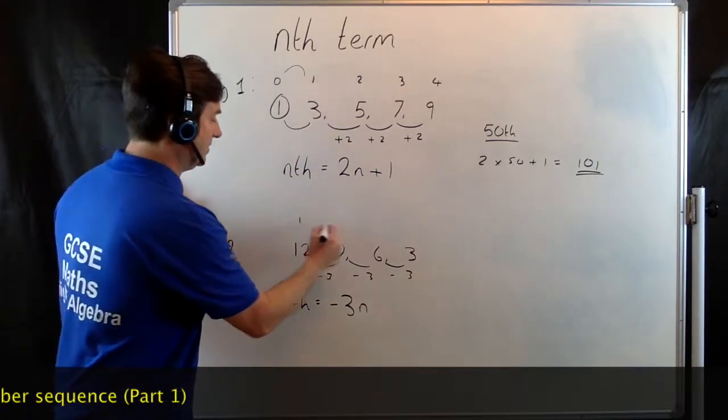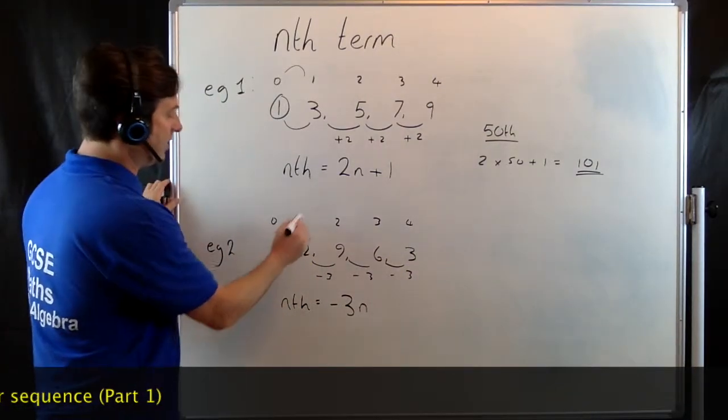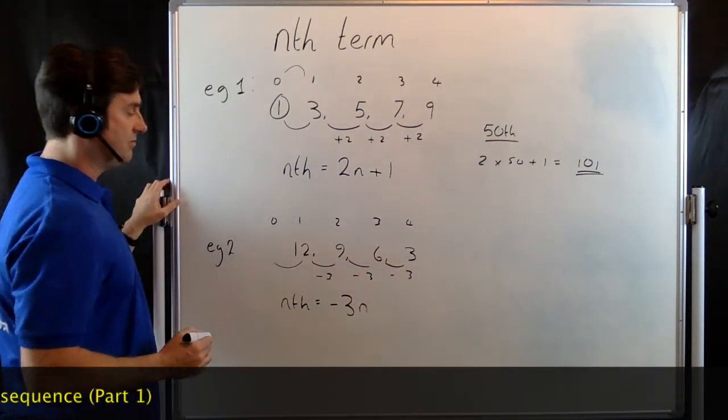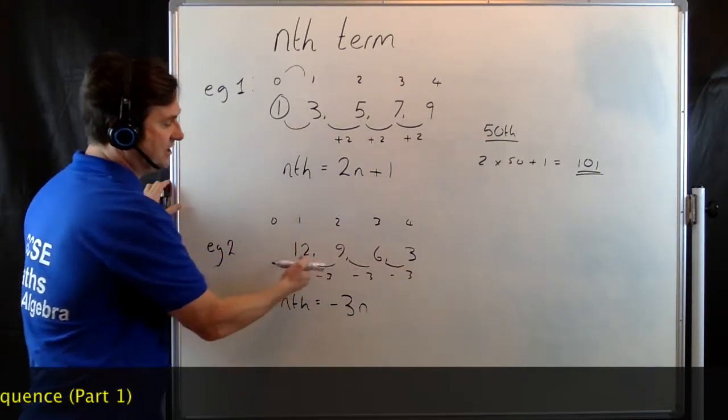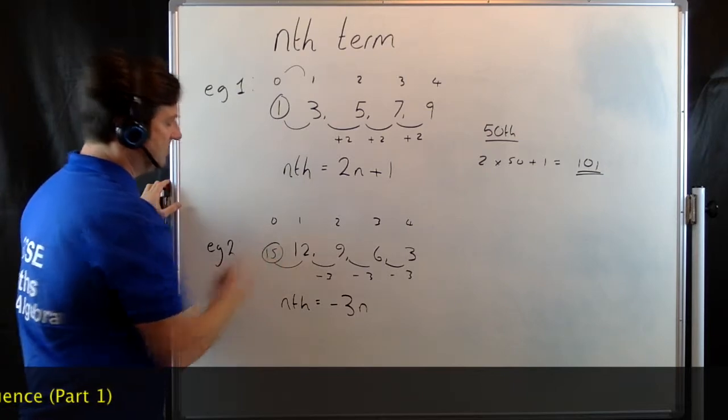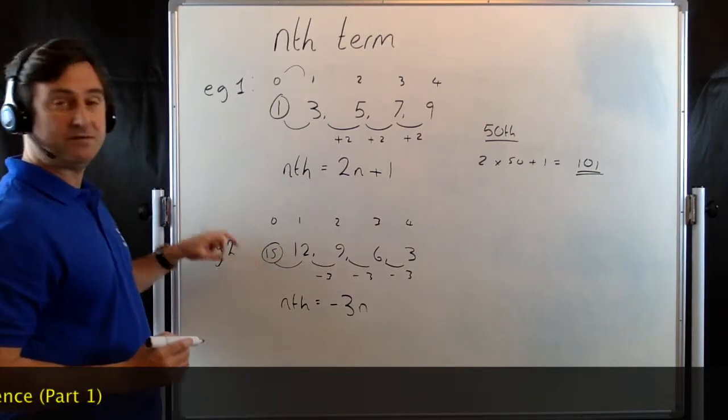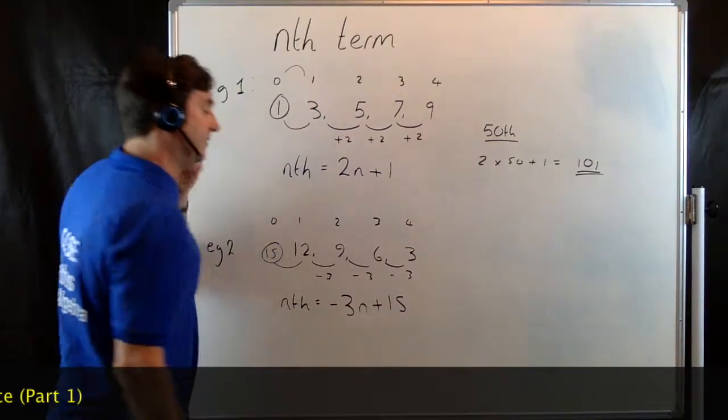So I haven't labelled these, but if I label them now. Our first term was 12. If we now go backwards to our 0 term, we're going to be adding 3 each time. So if you add 3 to 12, your 0 term is going to be 15. It's a positive 15. So you write plus 15 there.